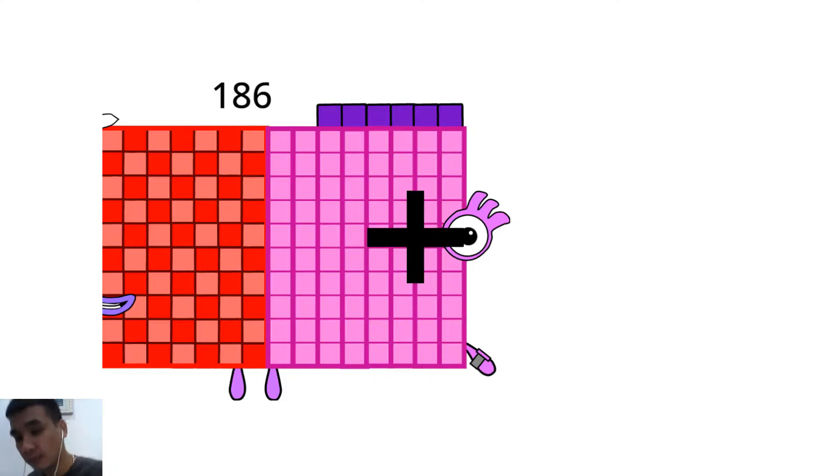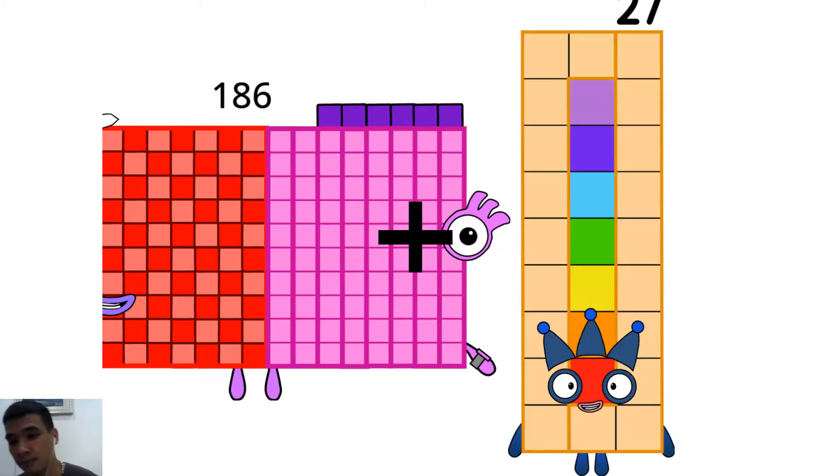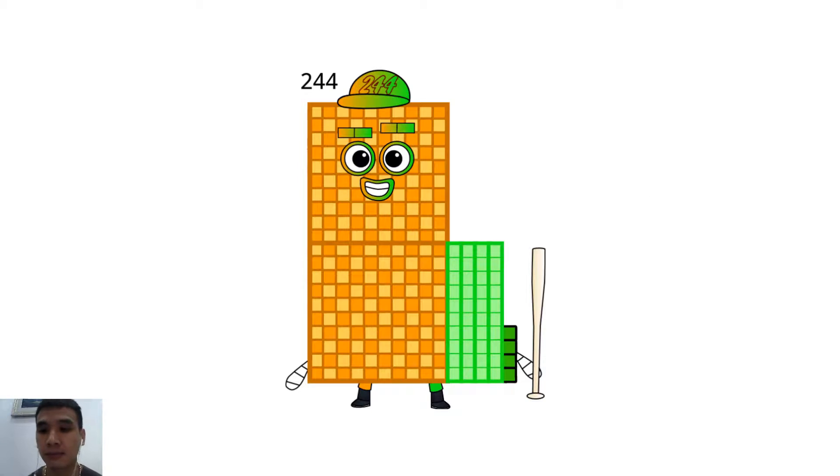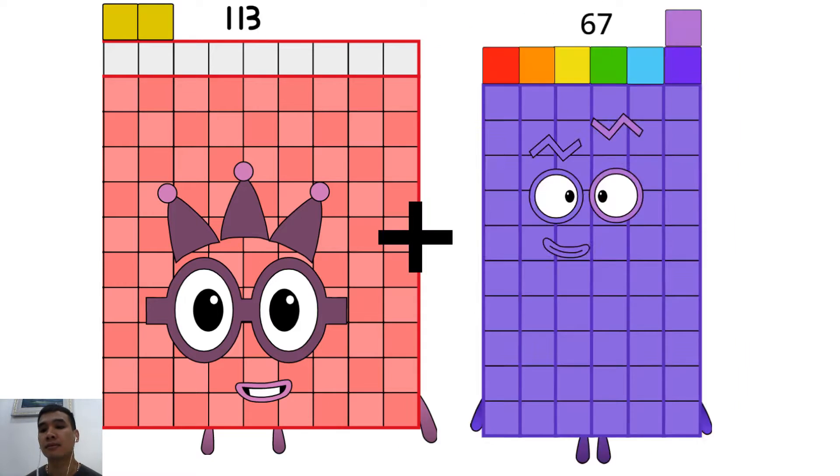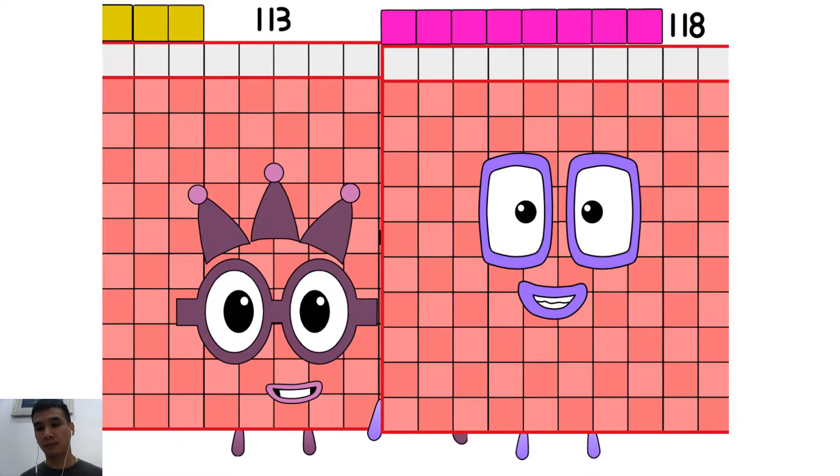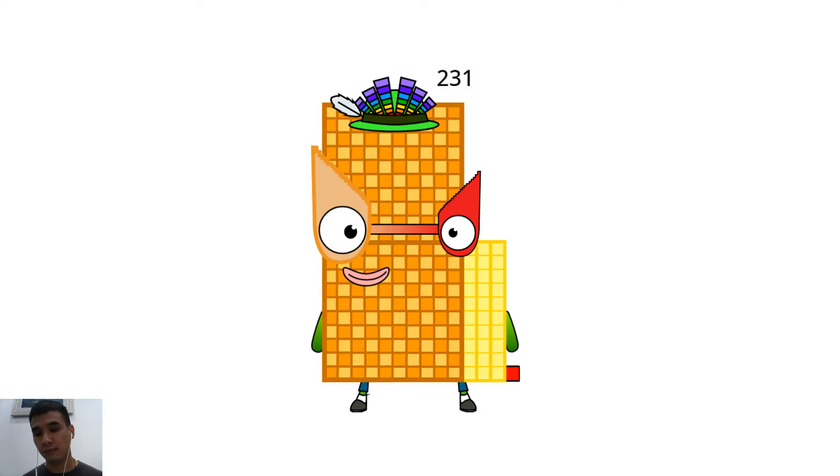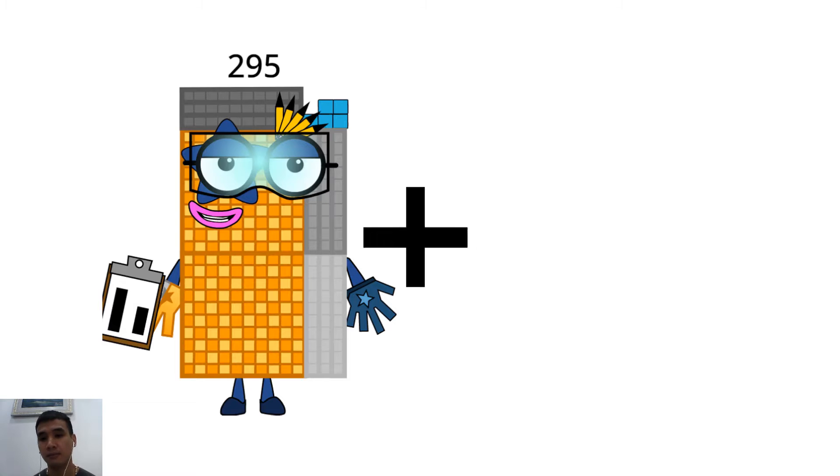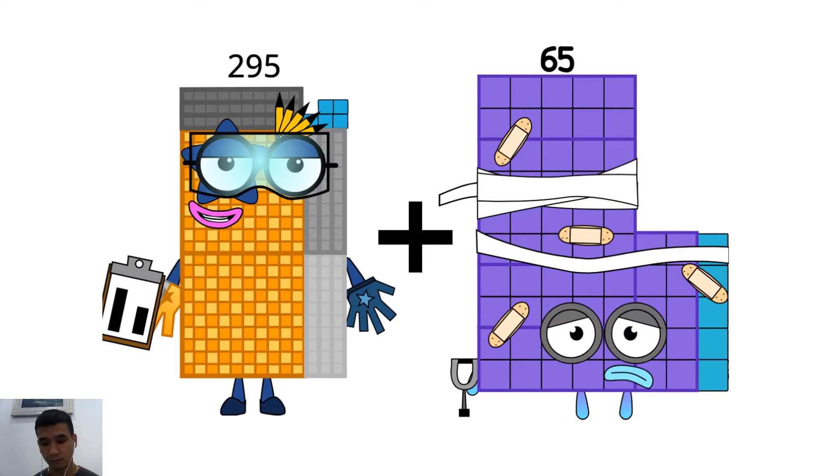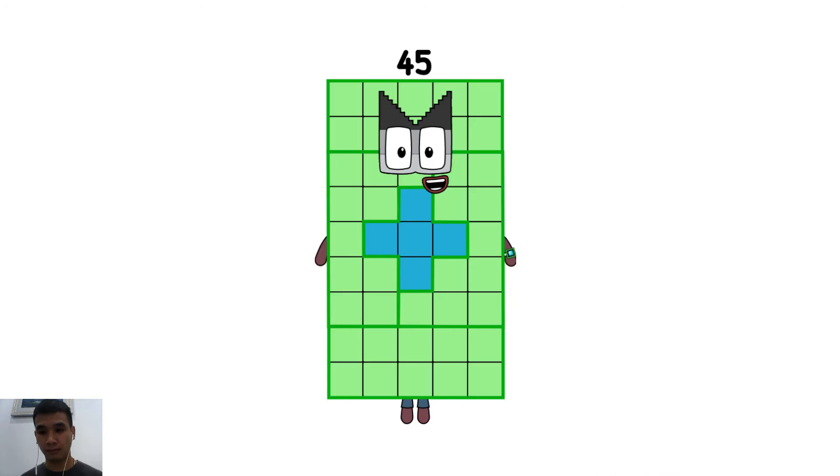186 plus 58 equals 244. 113 plus 118 equals 231. 295 plus 65 equals 255.